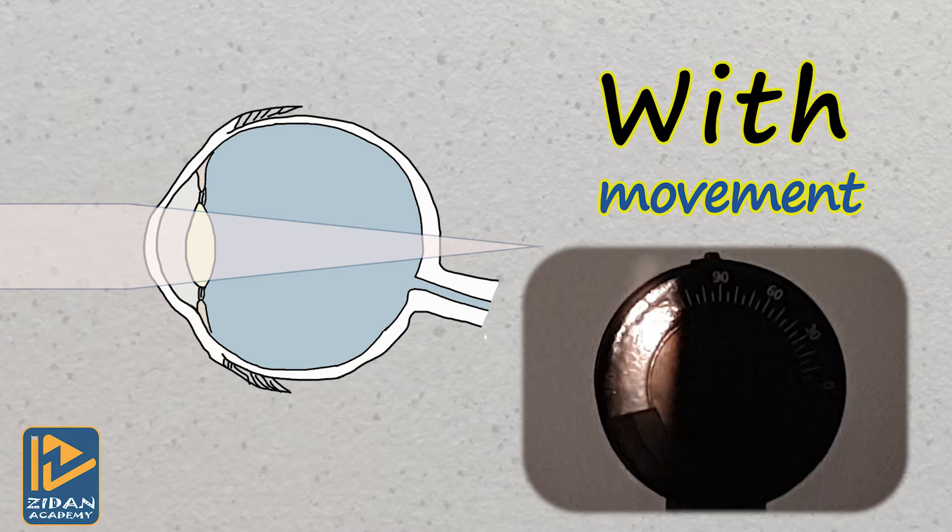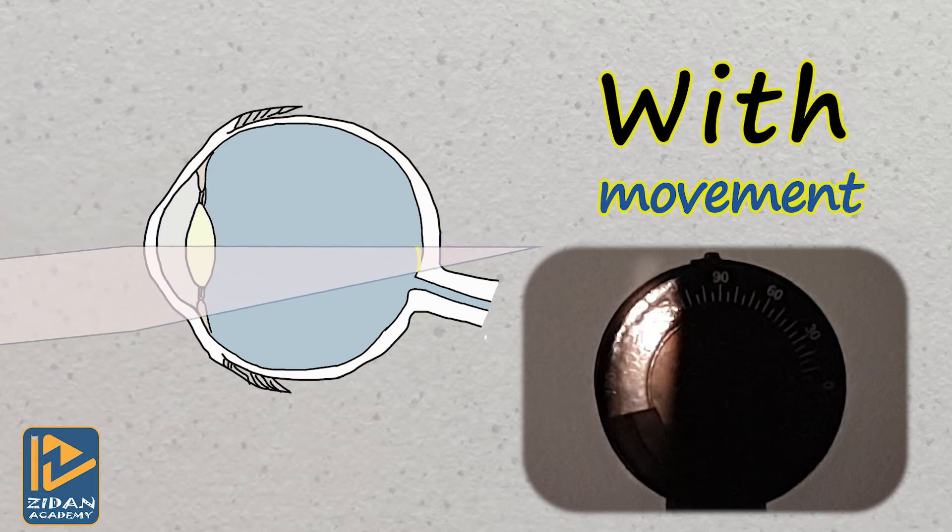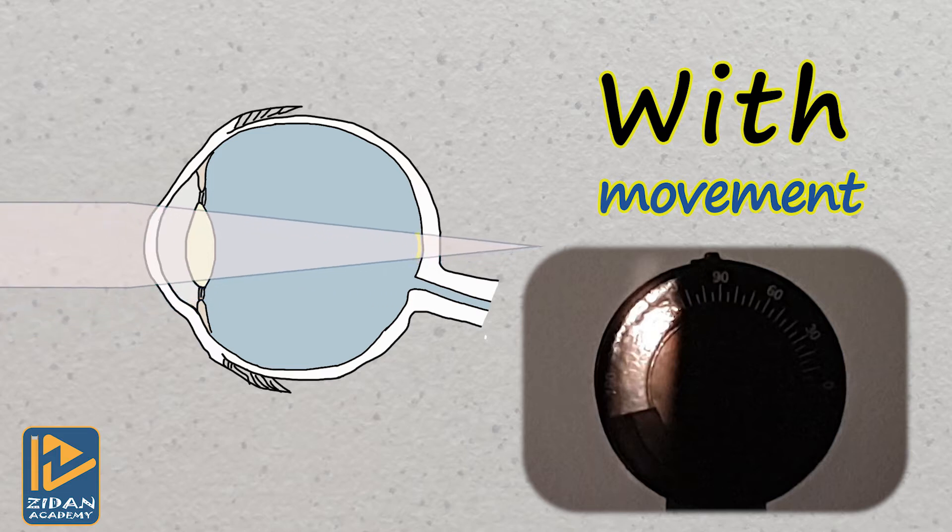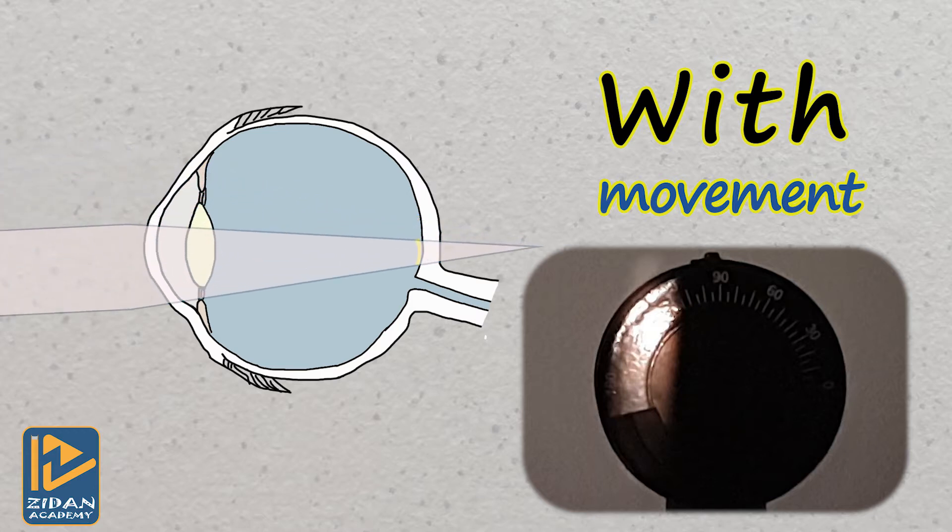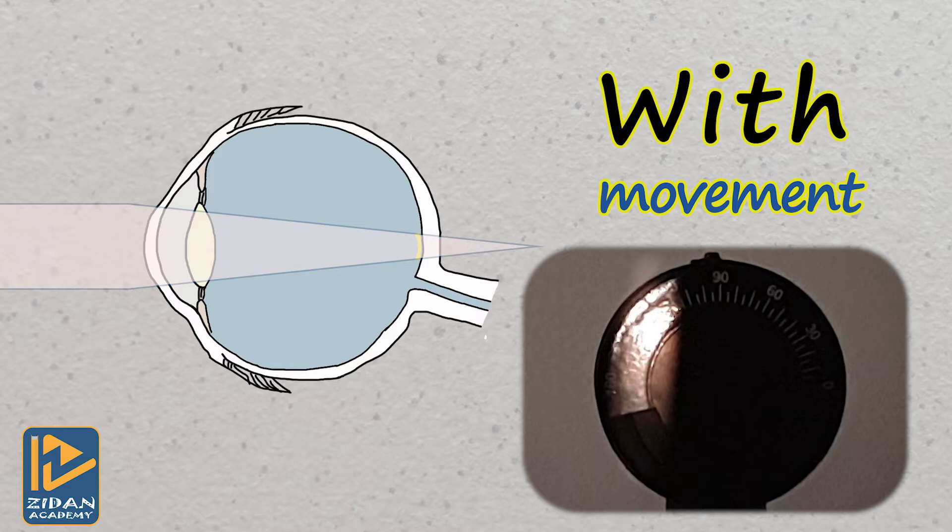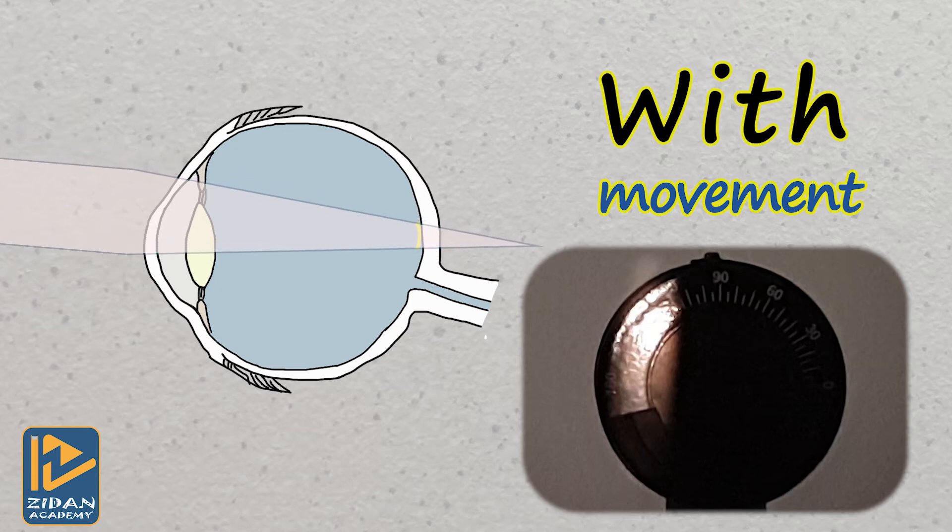As shown here in this animation, the reflected part—the yellow small part moving in this diagram—resembles the red reflex seen by the observer moving in the same direction as the sweeping light. So this is with movement.